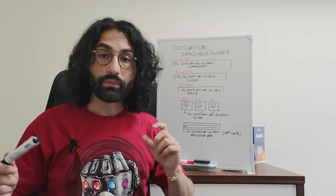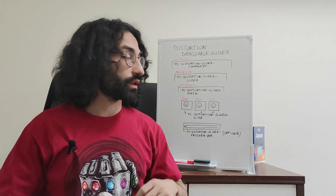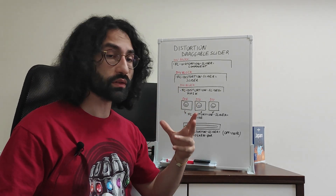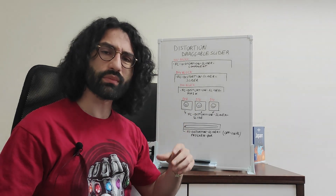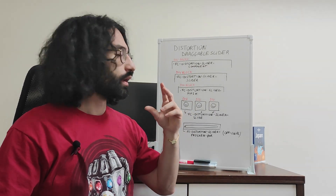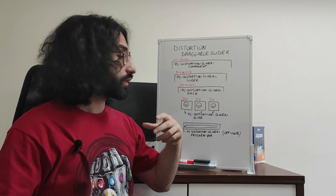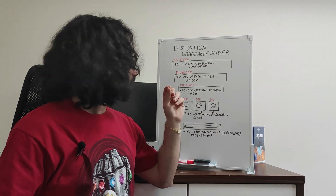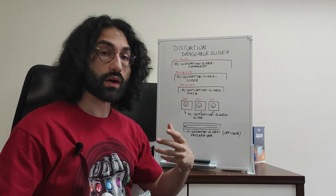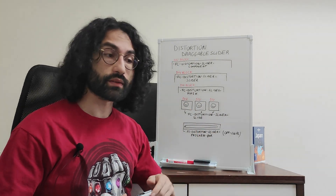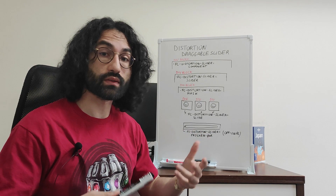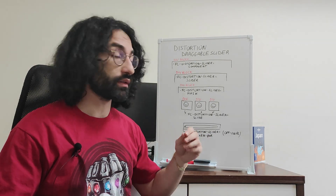But now let's take a look at the whiteboard. We have a few things to configure but the setup is pretty straightforward. First things first, we need to add a div block which will act as our component, the element that will host the slider.